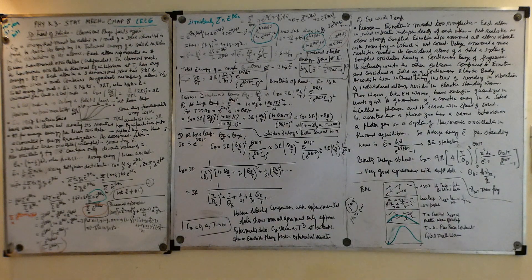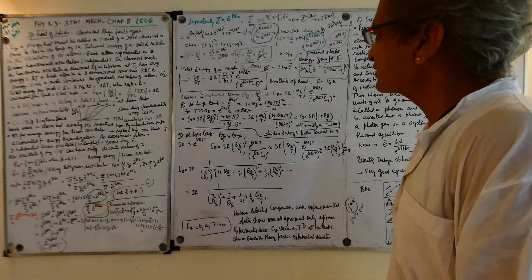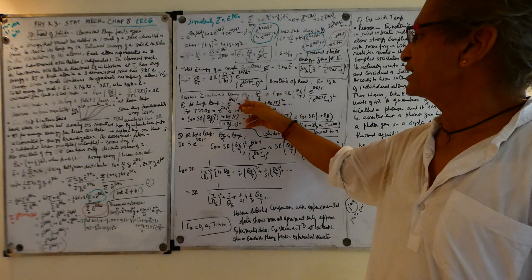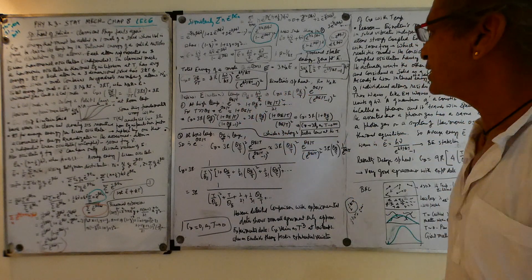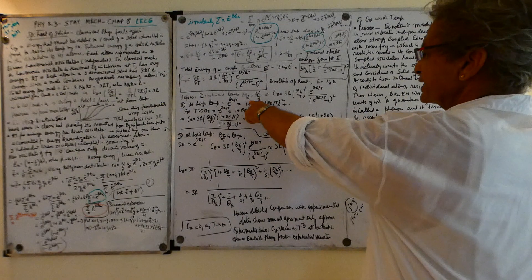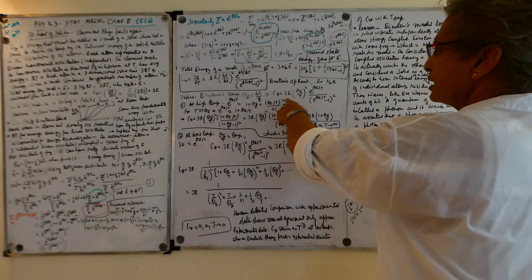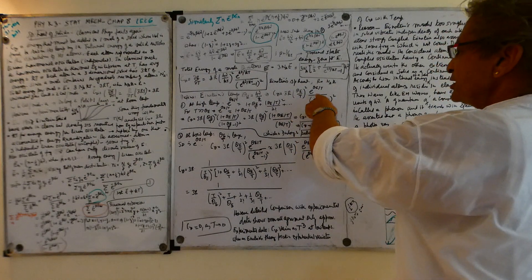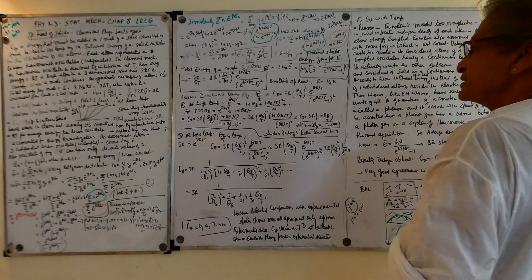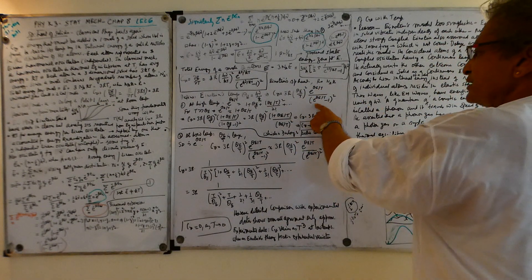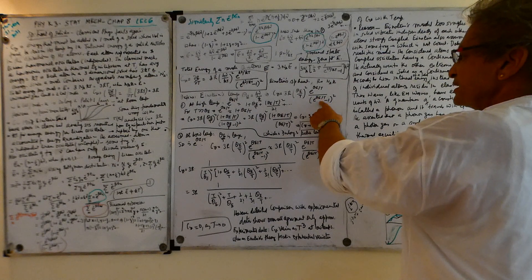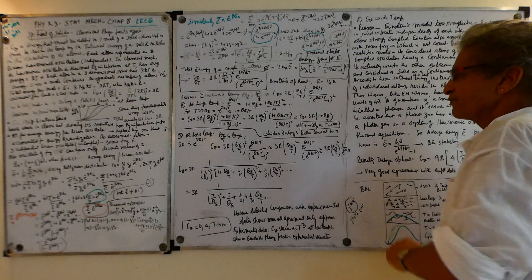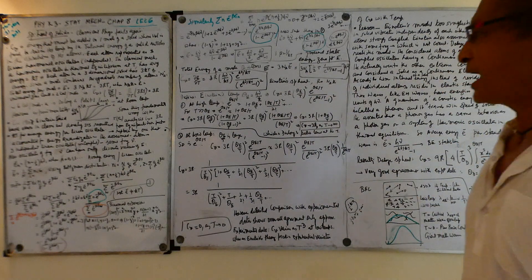I'm going to define the Einstein temperature θ_E, which is hν/k. So in terms of θ_E, this formula becomes: C_v = 3R (θ_E/T)² × e^(θ_E/T) / (e^(θ_E/T) − 1)². That's my formula. Now at high temperatures...